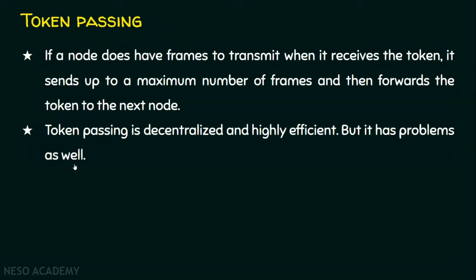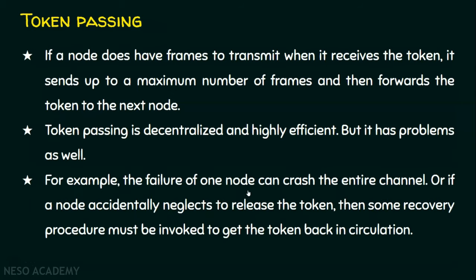But it has some problems as well. The failure of one node can crash the entire channel, because tokens must be exchanged among nodes in a fixed order — if a node fails, it can crash the entire channel. Or if a node accidentally neglects to release the token — meaning that station is holding the token for a long time — other stations will be waiting indefinitely. Some recovery procedure must be invoked to get the token back in circulation. This can happen due to a software crash, or deliberately, an attacker can make the system hold the token for a long time.